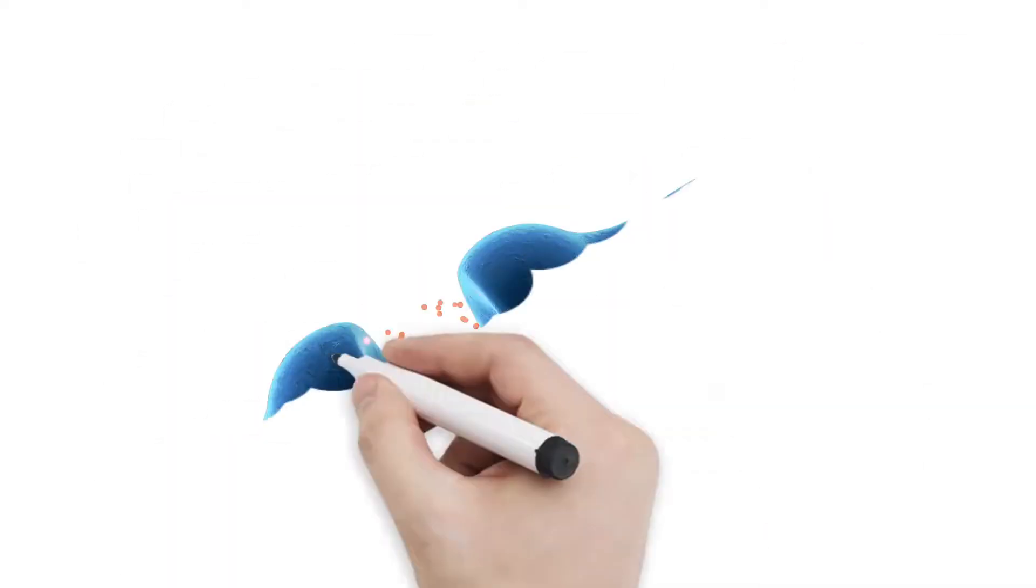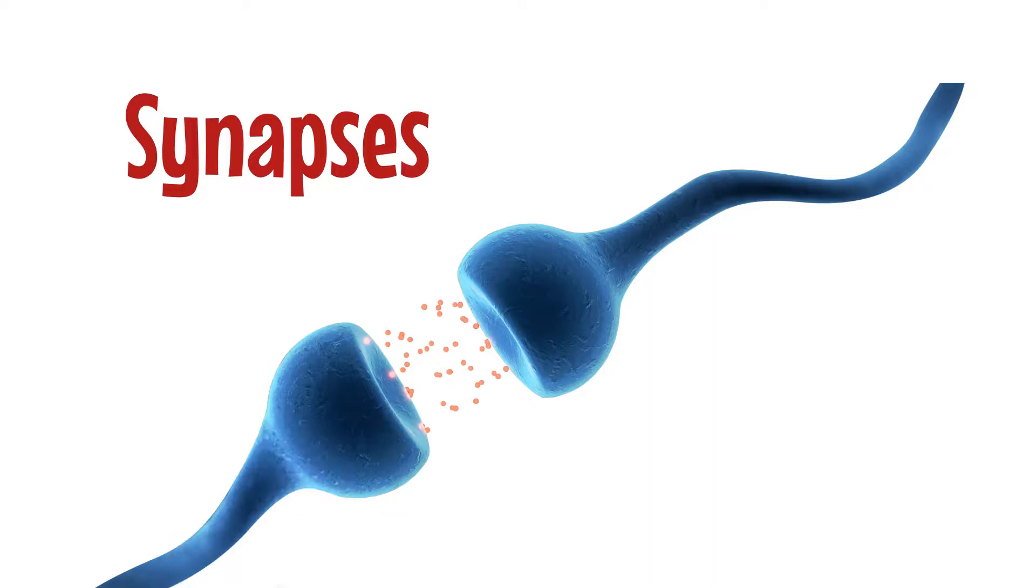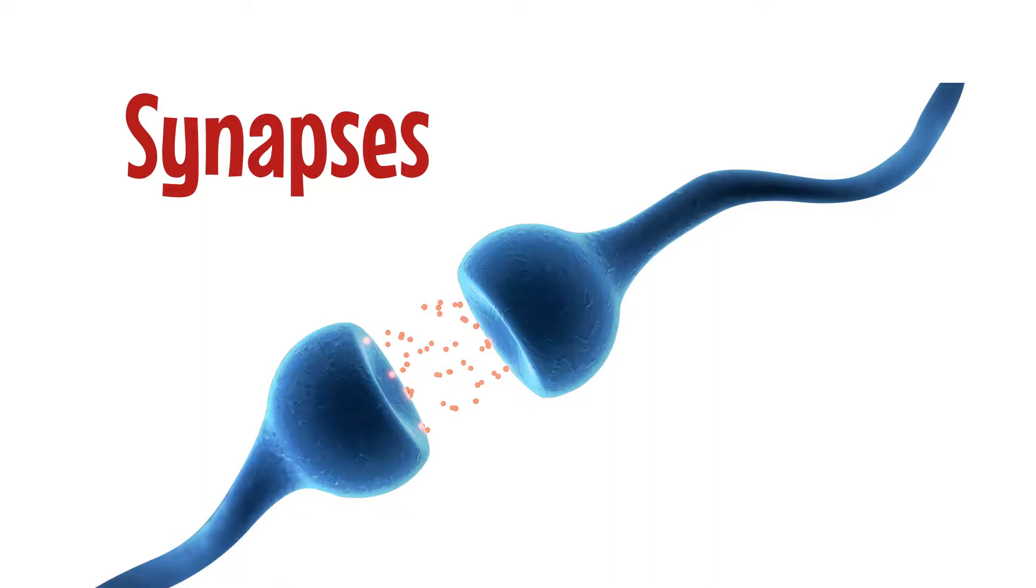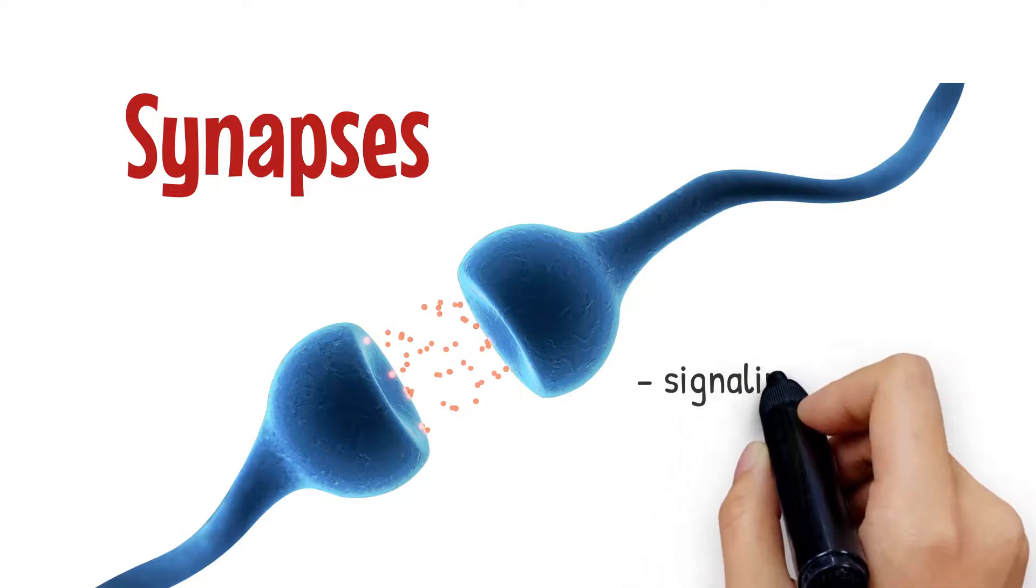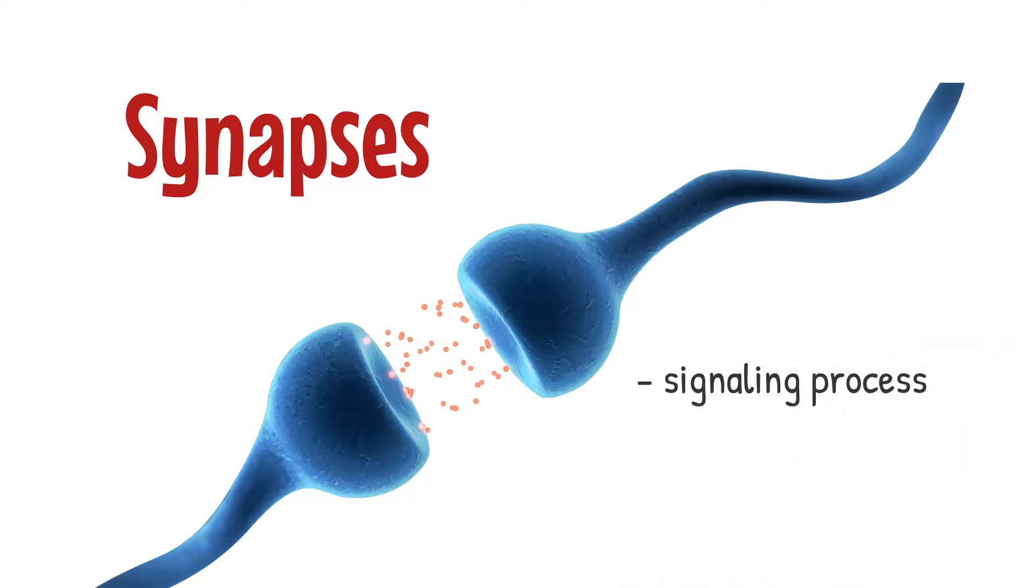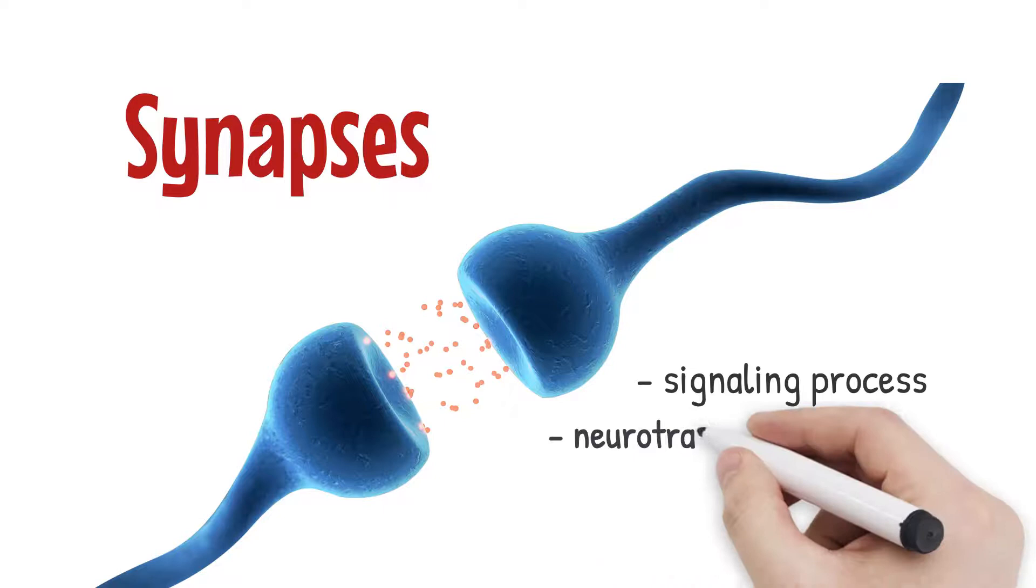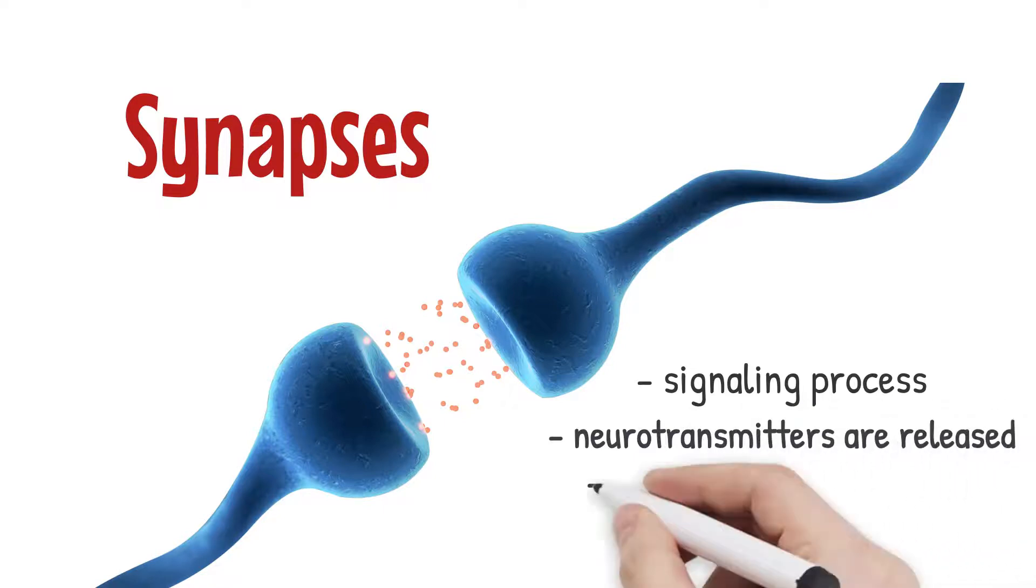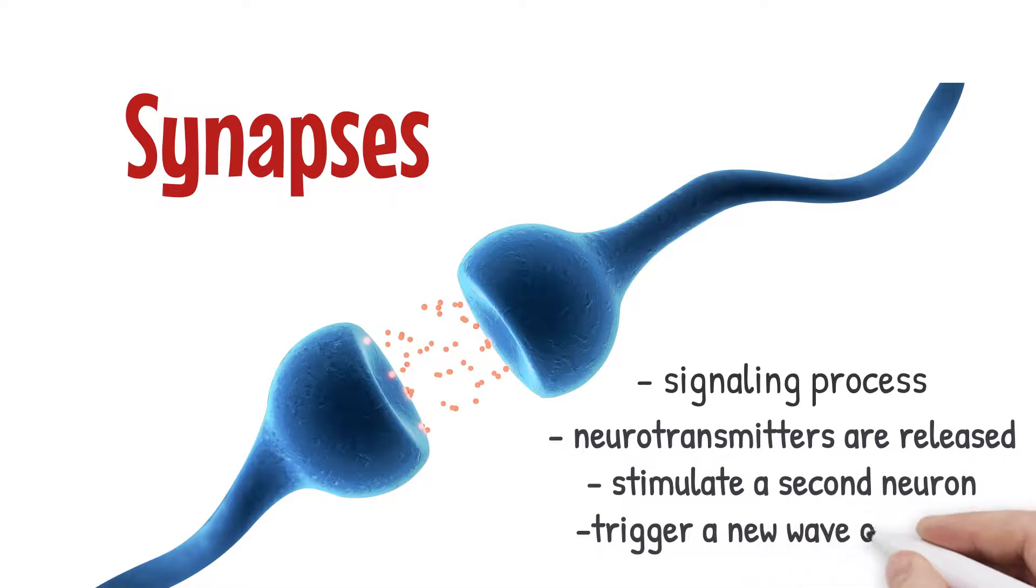Once the electrical signal reaches the end of the axon or the synapses, things become a little complex. The synaptic signaling process, part chemical and part electrical, is the key to neural function. Once the action potential reaches the synapses, unique molecules called neurotransmitters are released. These molecules then stimulate a second neuron and hence trigger a new wave of signals that interact with its receptors.